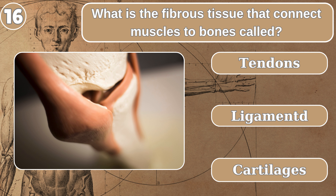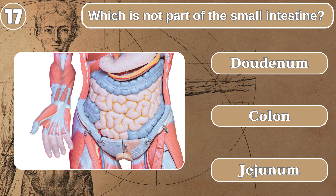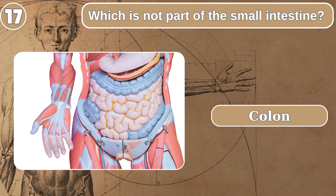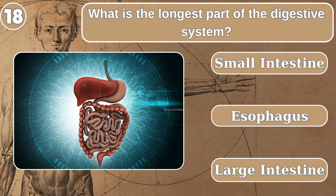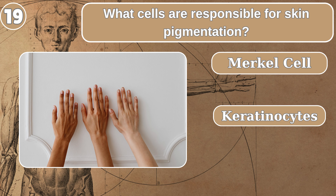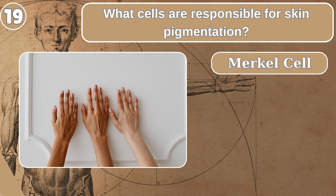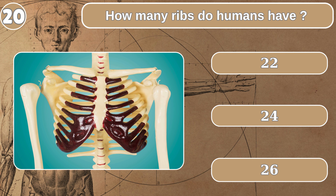What is the fibrous tissue that connects muscles to bones called? Tendons. Which is not part of the small intestine? Colon. What is the longest part of the digestive system? Small intestine. What cells are responsible for skin pigmentation? Melanocyte.